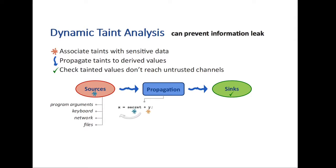The propagation component is a set of policies that define how to compute taints for values that are derived from sensitive data. For example, in this simple equation here, x equals secret plus y. Here x will be tainted by both secret and y.